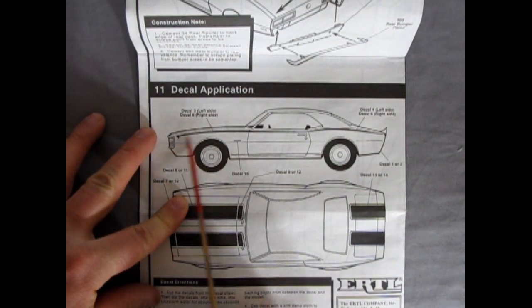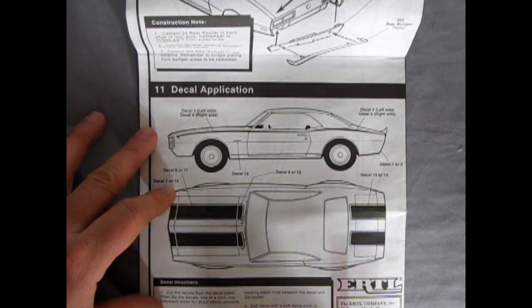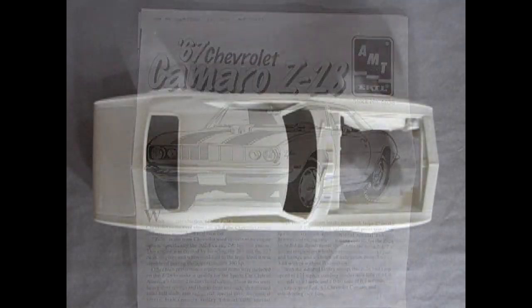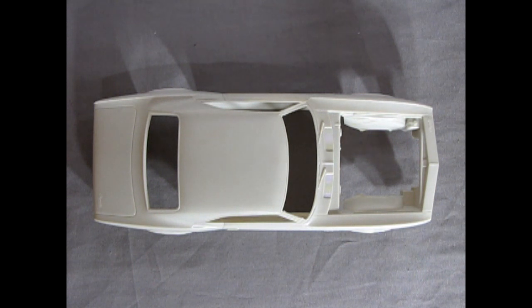So you've got the stripes going on the sides, as well as your black ones on the hood. So really nice from AMT at the time.